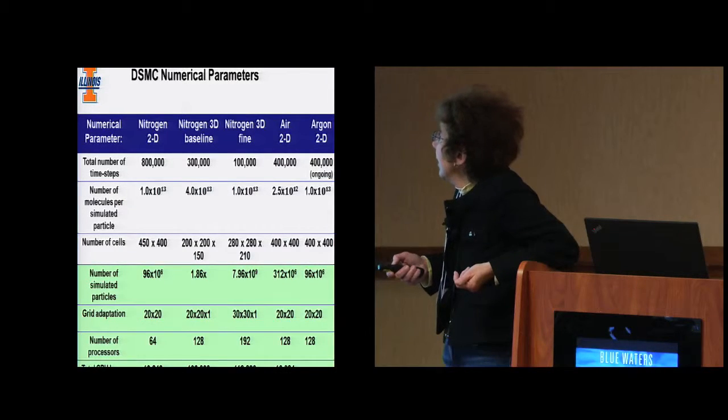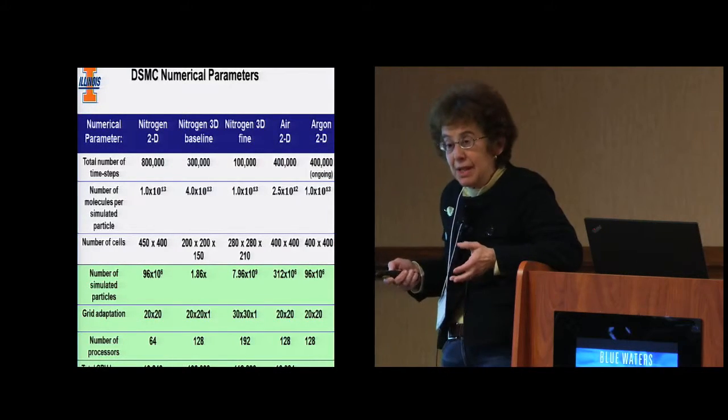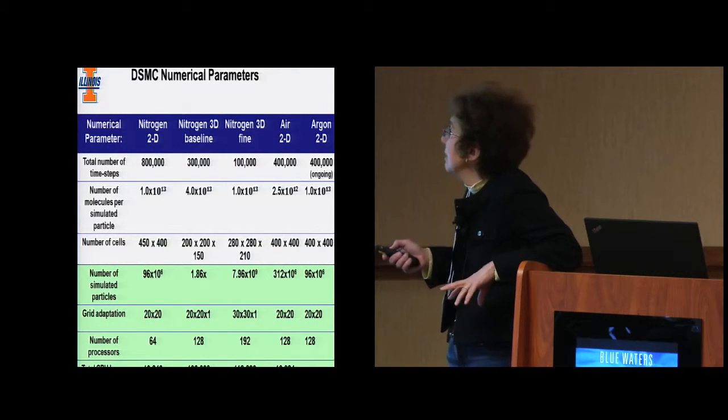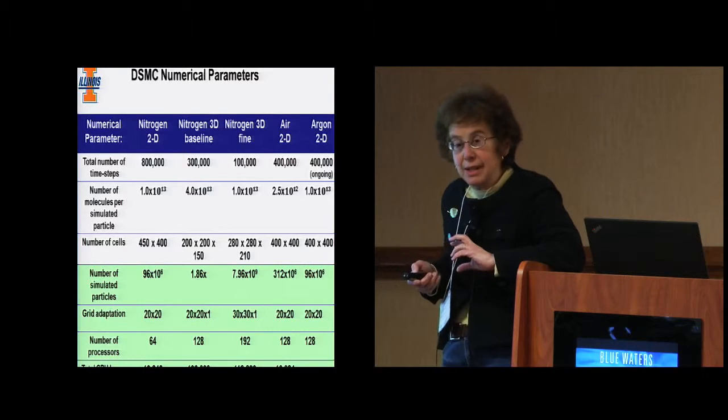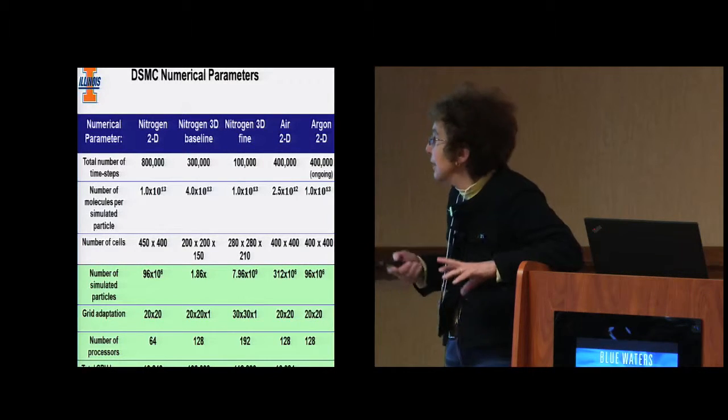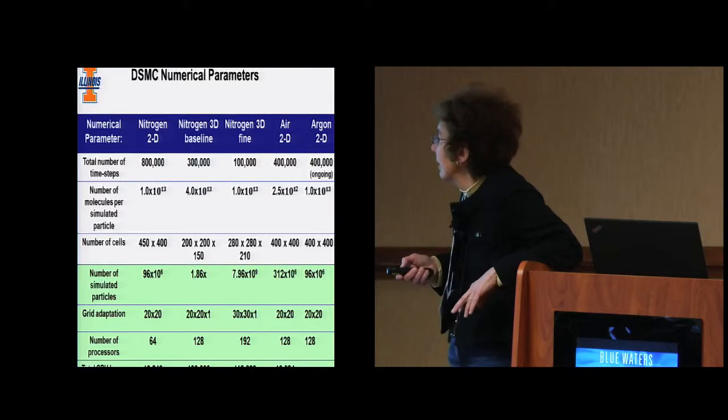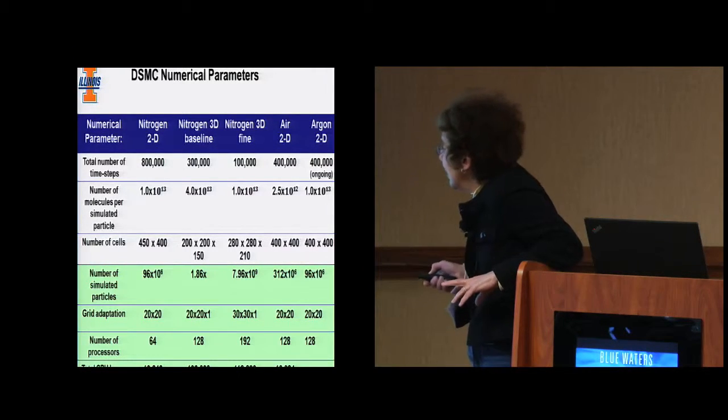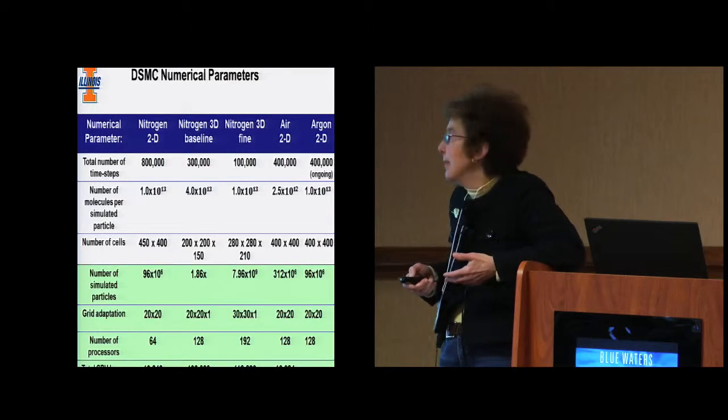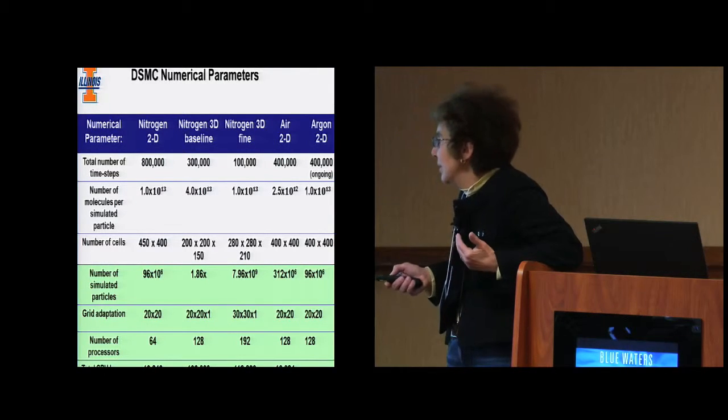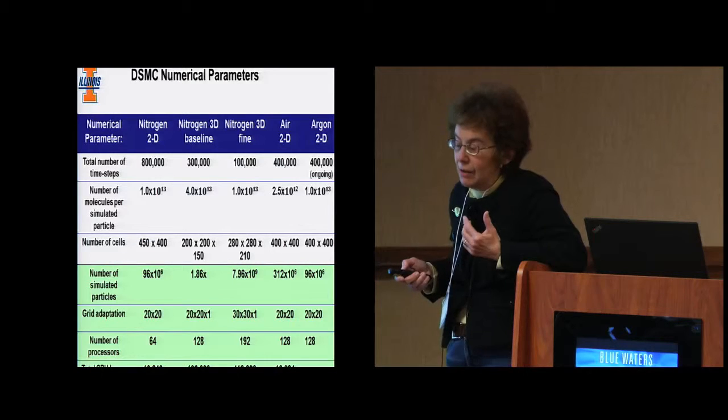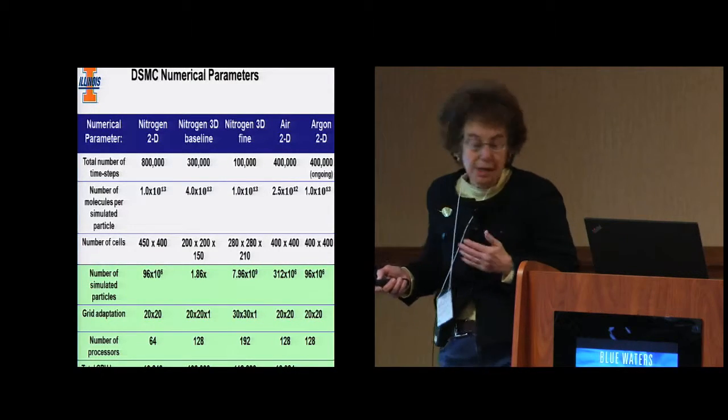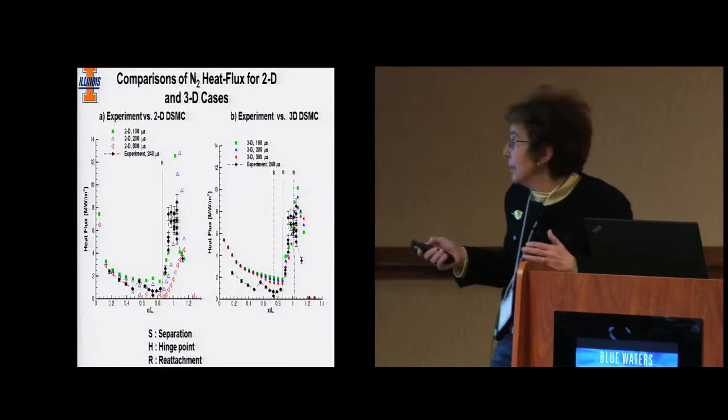These are some results we generated not on Blue Waters, but on DOD high-performance machines. I put them up because they were generated with what I'll call an ancient Fortran code, a parallel code. These give you some idea about the scale of the computations. Our goal on Blue Waters is to enable at least factors of 10 to 100 more capability than what we show here.